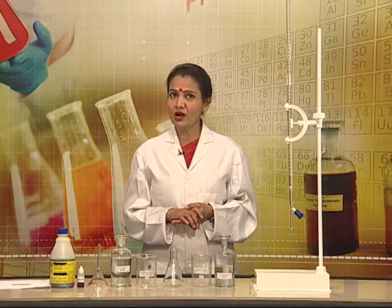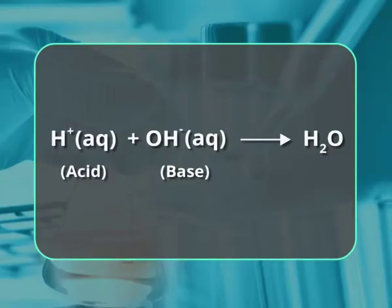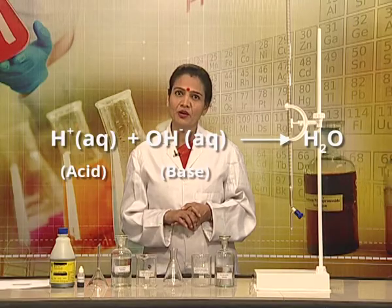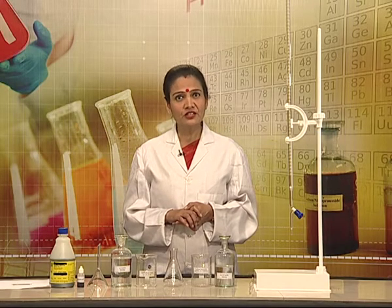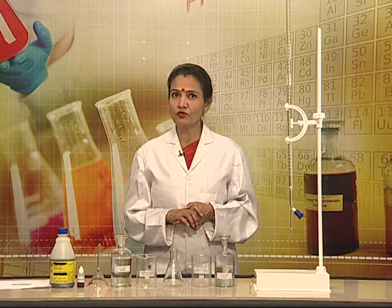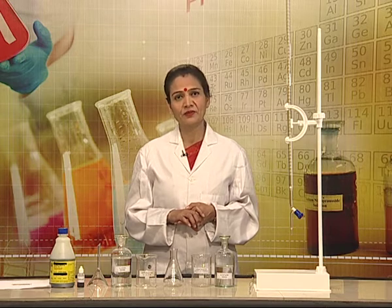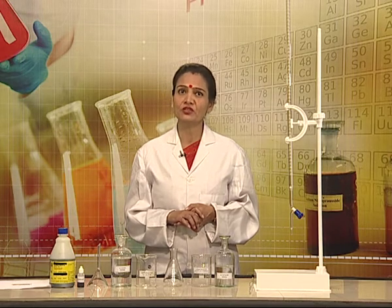A question arises: how much solution should be added to complete the reaction, or how do we come to know about the completion of a reaction? We should add enough solution so that the neutralization reaction is complete. The stage at which this happens is called the equivalence point. However, it cannot be detected visually because the color of the solution does not change up to this stage. We must add one drop excess of the titrant to change the color of the solution, which can be seen clearly. This point is called the end point of the titration.